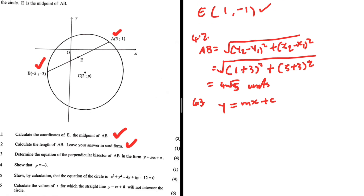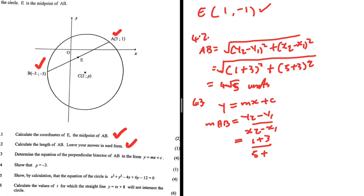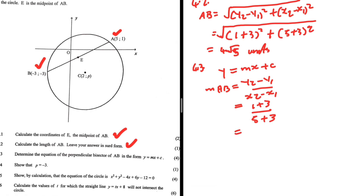Because if we have the gradient of AB, it will be easy to find the gradient of the perpendicular bisector. The gradient of AB is (Y2 minus Y1) divided by (X2 minus X1). Taking A as the second point, we get (1 plus 3) divided by (5 plus 3), which gives us 4 over 8, which is 1 over 2.